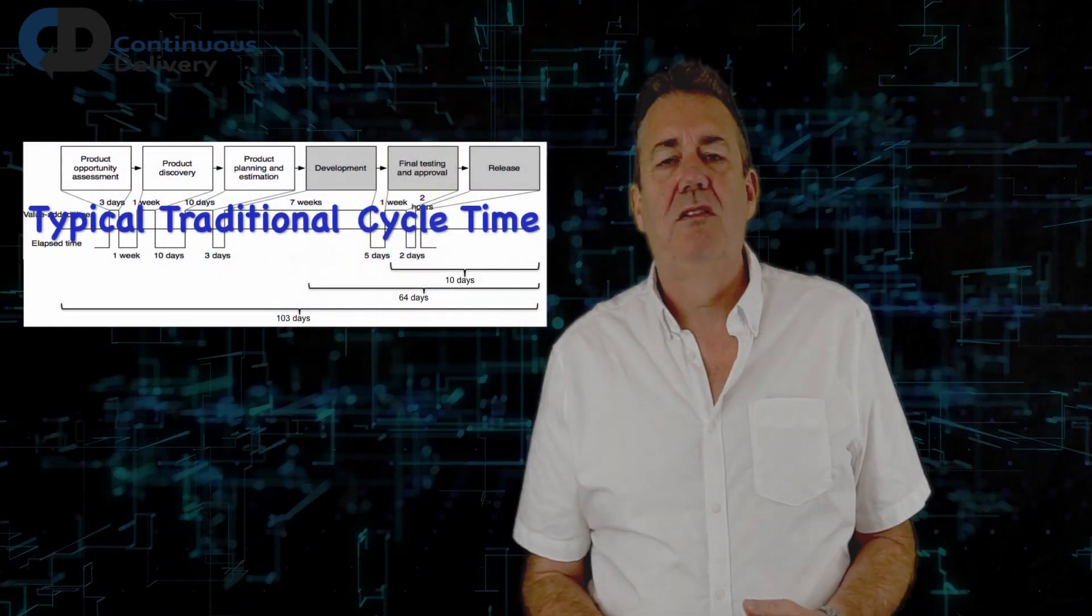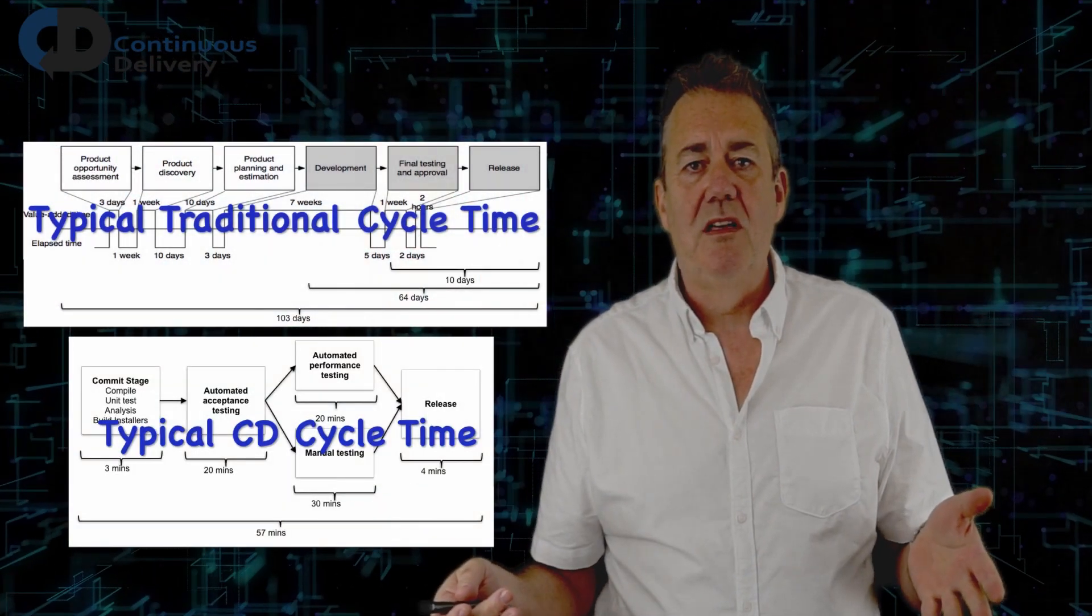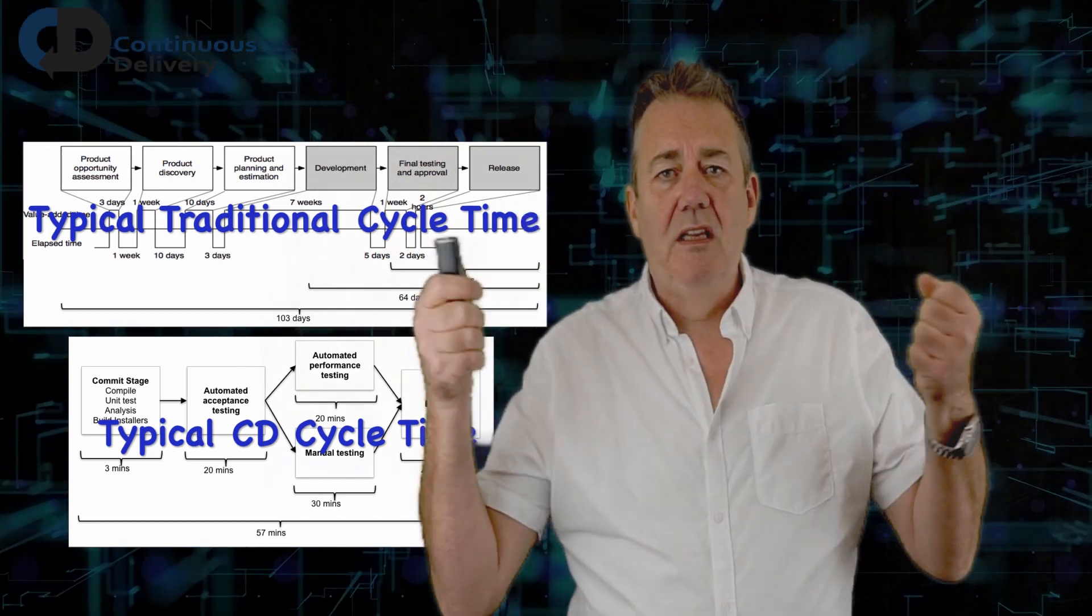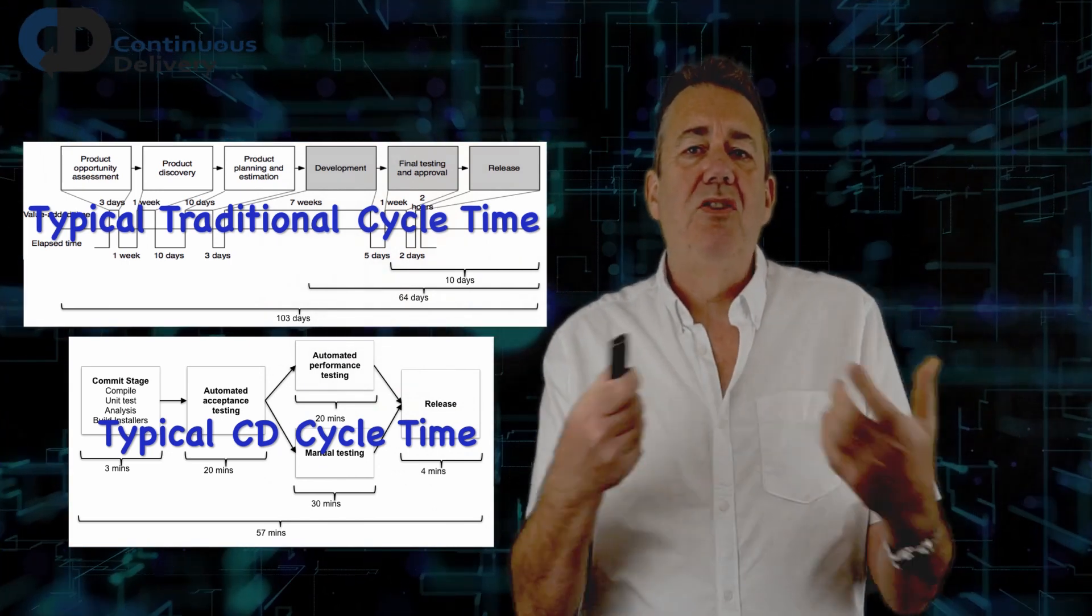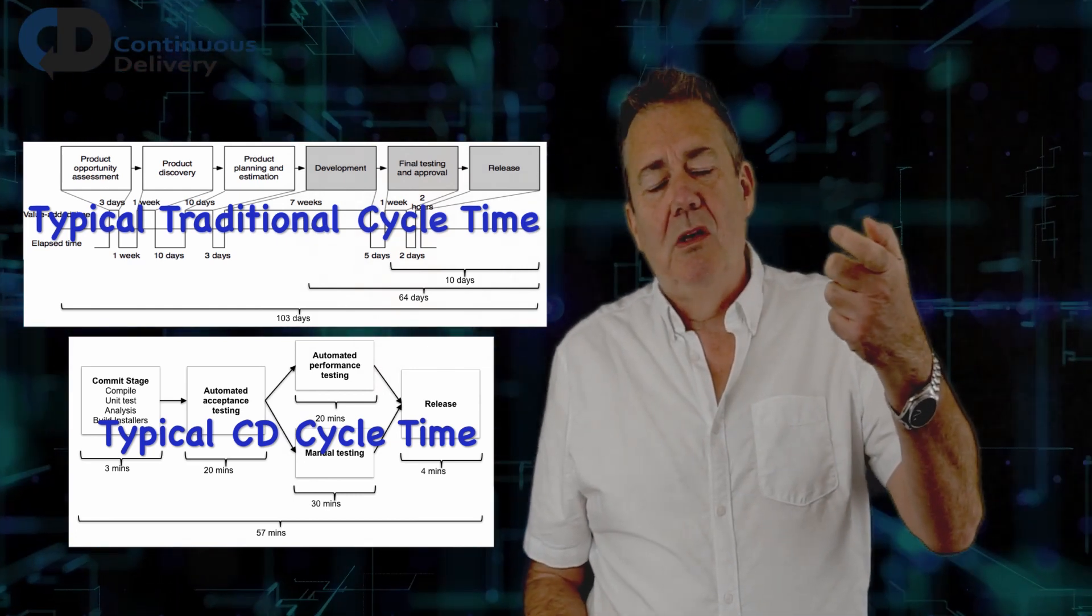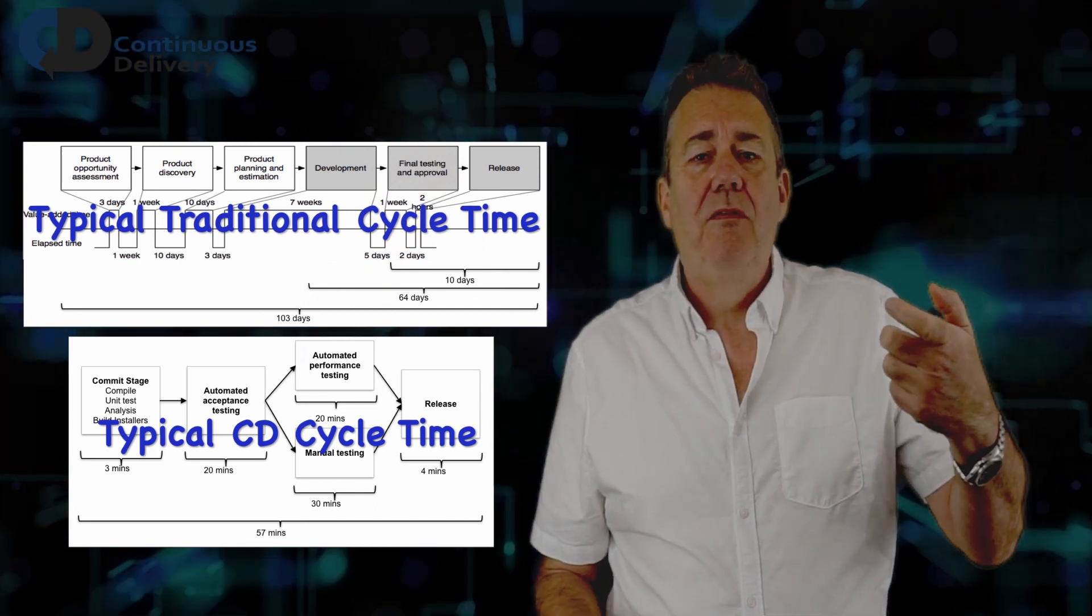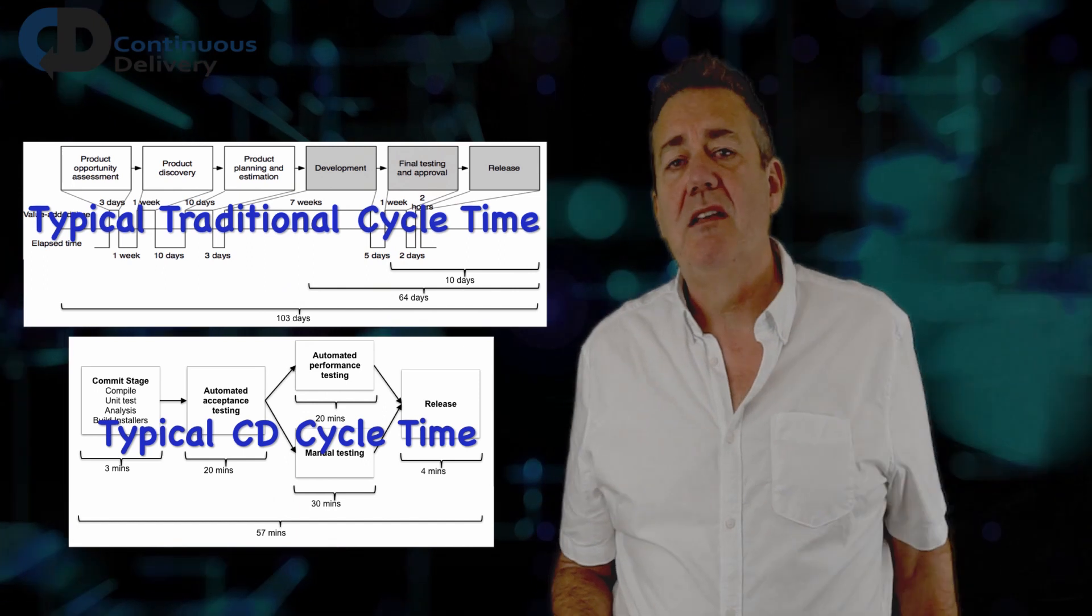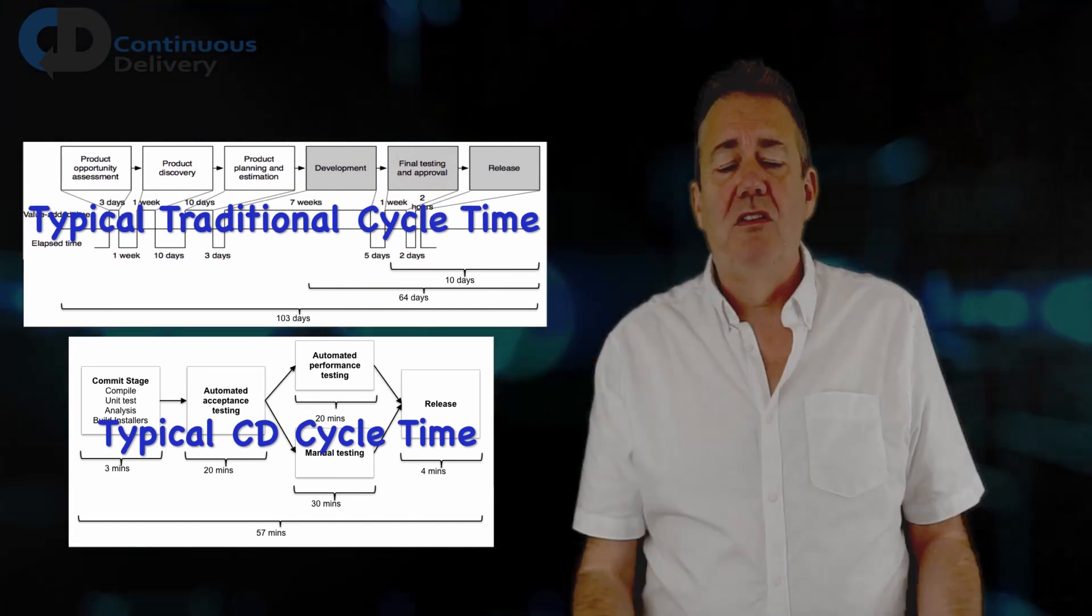So let's think about cycle time. Cycle time is a measure of the efficiency of our development process. It measures from essentially having an idea to getting that idea into the hands of users in the form of useful software. And a good way to imagine this, to think about measuring this, is to imagine making a single line change to your production environment. How long would it take you if you followed all of the rules of your development process to achieve that single line change? So cycle time is an effective measure of the efficiency of our process.